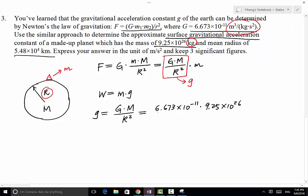Now, divided by R squared, which is 5.48 times 10 to the 4th power kilometers, but kilometer is not an SI base unit. It is actually a thousand meters. So if I want to avoid doing unit conversion,